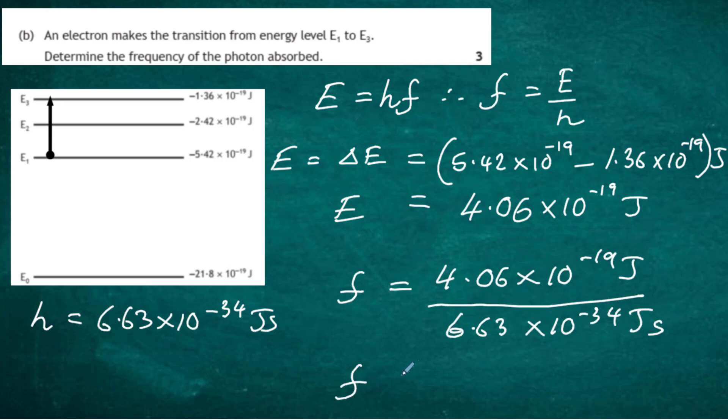So the frequency, if we do that in our calculator, is going to come up to be 6.12 times 10 to the power 14. And the units for frequencies hertz, because joules cancel out with joules, you're left with a second to minus 1, which is really equal to the hertz. So there's the frequency of the photon needed to promote that electron from E1 to E3.